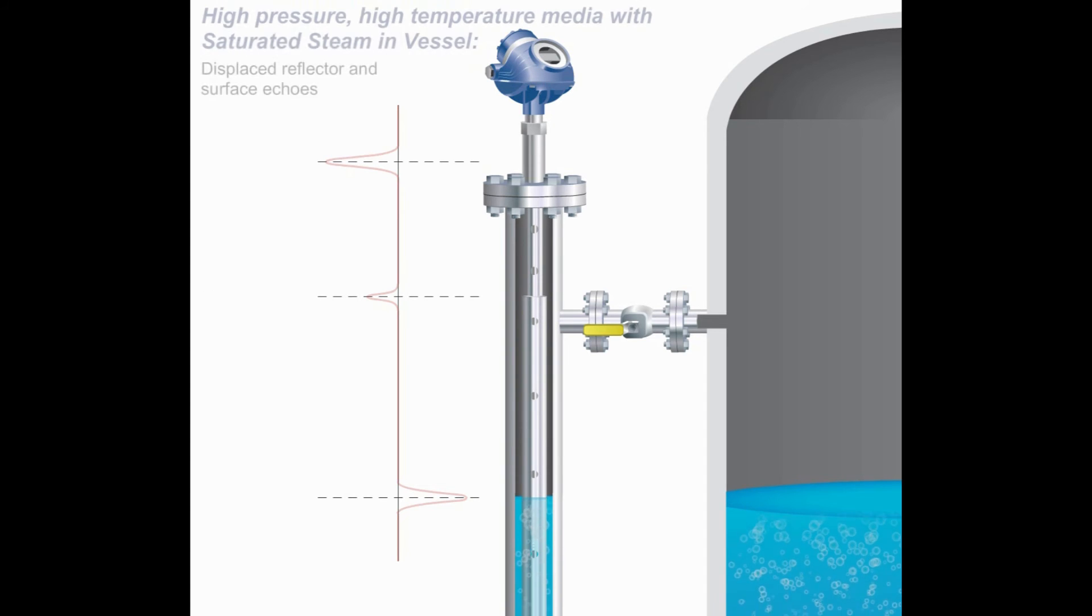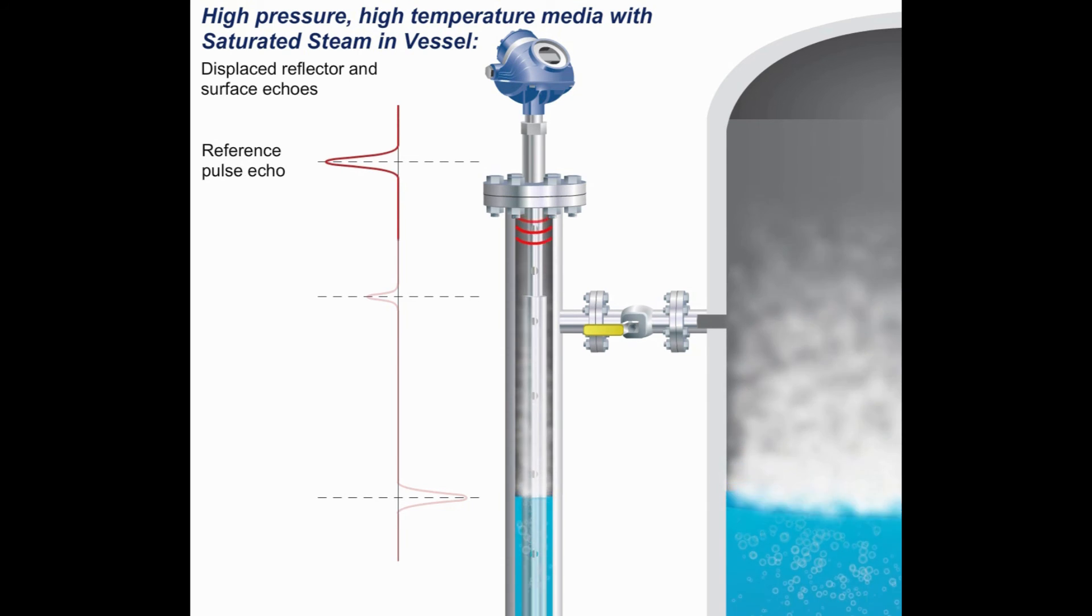A new case appears when high pressure saturated steam is added. Here you can see that both the reflector pulse and the surface pulse have been displaced due to the slower travel speed of the microwave pulses in the presence of steam.